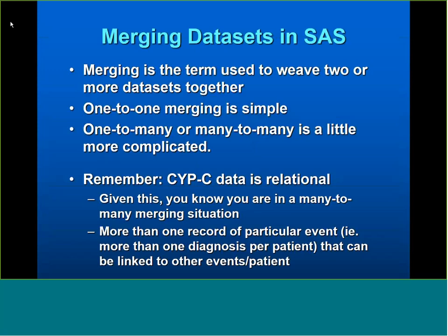The first thing we'll talk about is merging data sets — the term we use when putting two data sets together or weaving them together. There's one-to-one and one-to-many merging. One-to-one is the simplest: two data sets with a key, only one record per key in each — you just push them together. It gets more complicated with one-to-many or many-to-many matching, where there are multiple records per key and you have to think carefully about what SAS will actually do.